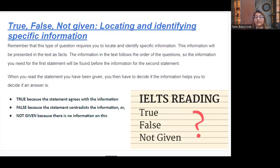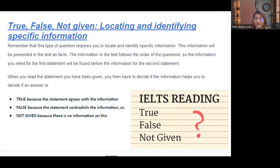True/False/Not Given questions are also called 'locating and identifying specific information.' This question type requires you to locate and identify specific information presented in the text as facts. The information in the text follows the order of the questions. You then decide: True if the statement agrees with the information, False if the statement contradicts the information, or Not Given if there is no information — meaning it is neither true nor false.